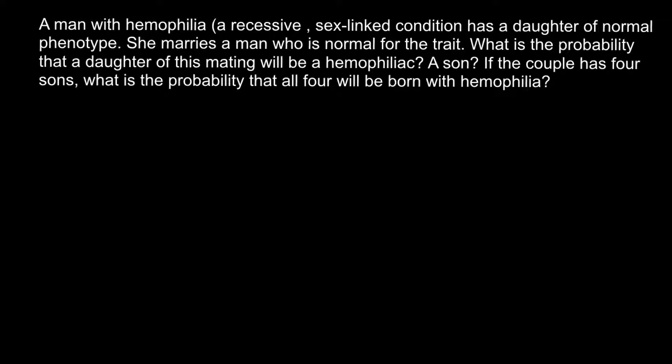How are we going to solve this problem? We are told that the man has hemophilia. Let's use red color to designate the defective X chromosome — of course not the whole chromosome is defective, only one allele on that chromosome — and green color for the normal X chromosome. The man's genotype would be X and Y, so this is the affected male genotype, and he marries a phenotypically normal female, whose genotype we place on the side.